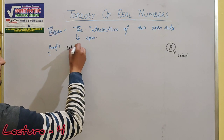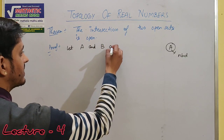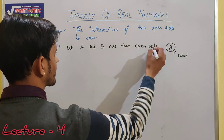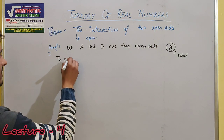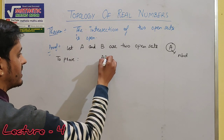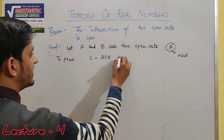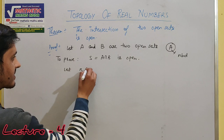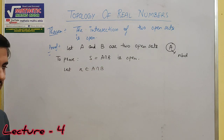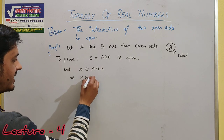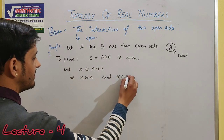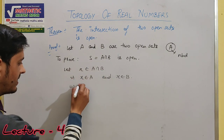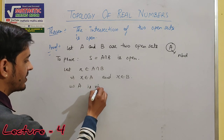तो हम यह मान लेते हैं कि let A and B are two open sets। क्या proof करना है यहाँ पे? कि इनका जो intersection होगा — A intersection B — उसको हम मान लेते हैं S, इसको भी open proof करना है। Open proof करने के लिए हमने एक element x लिया — A intersection B का। A is neighborhood of x, क्योंकि A open set है।